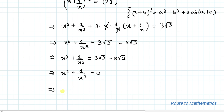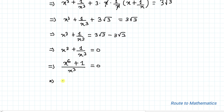Taking the LCM, we multiply through to get x to the power 6 plus 1 equals 0, which gives us x to the power 6 equals minus 1.